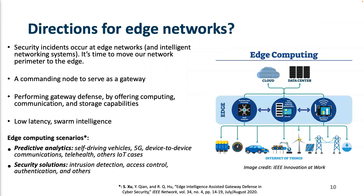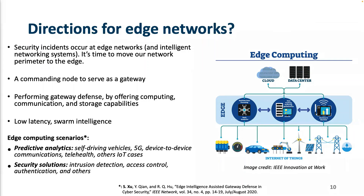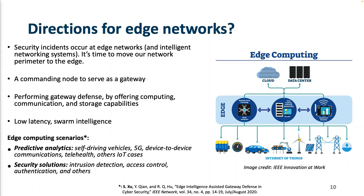We have cloud computing, but the newer direction is: when dealing with edge networks, what are the security countermeasures? Security incidents occur at the edge network and across the entire networking system, so it's time to move our network perimeter to the edge. The idea is that we need a commanding node to serve as a gateway that can perform many services — computational tasks, communication tasks, storage, and also defend edge networks.